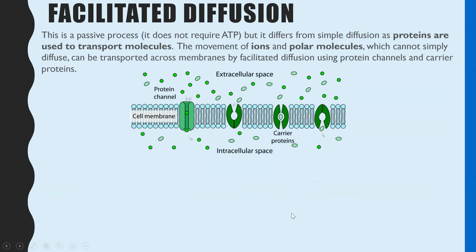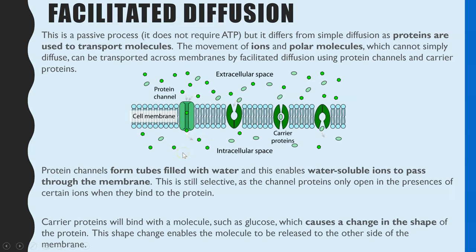The second type of diffusion is facilitated diffusion. It's still a passive process, meaning it doesn't require any additional ATP energy, but it's different from simple diffusion because it does use proteins embedded within the membrane. Those proteins are used to transport molecules from one side of the membrane to the other, enabling ions, polar molecules, and molecules too large to simply diffuse through the phospholipid bilayer to move. It's still movement from a high concentration to a low concentration — the difference is it's through either protein channels or carriers.